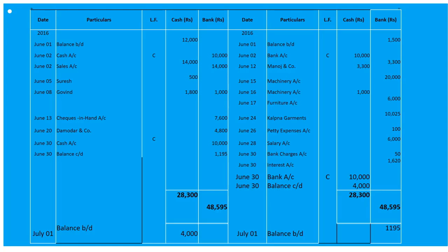June 3rd — purchased goods for 7,000 from Manoj and Company on credit. Since it is a credit entry we do not record it in the cash book. June 5th — received a money order from Sureish for 500 rupees: 'To Sureish Account' 500 under cash.